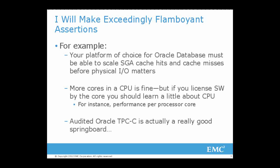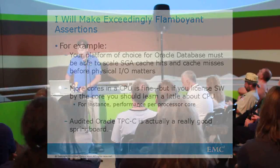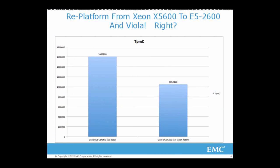We can actually look at some freshly audited Oracle TPC-C results as a springboard into this topic. I have just shown you a bar graph with audited TPC-C that shows the latest CPUs are faster than the previous CPUs — and I made all of you walk all the way over here from Oracle Open World to learn that nugget of wisdom. 60% more. That's all you should care about, right?